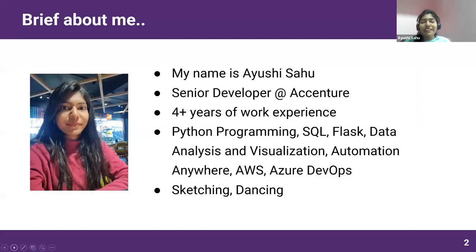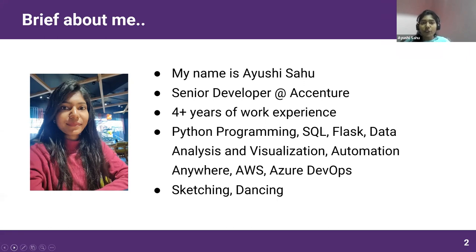My name is Ayushi Sahu. I'm a senior developer at Accenture. Before that, I worked with Tata Consultancy Services. I have four-plus years of experience in Python programming. I've also worked with web development, automation projects using Selenium and Automation Anywhere. I'm a certified AWS developer and certified Automation Anywhere developer, and I have knowledge of AWS, Azure DevOps, and SQL.